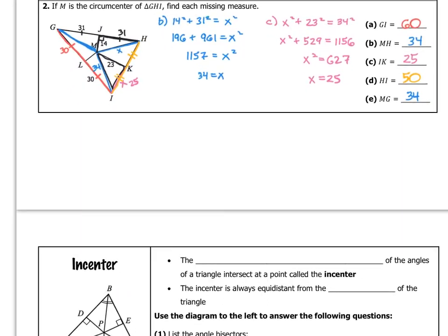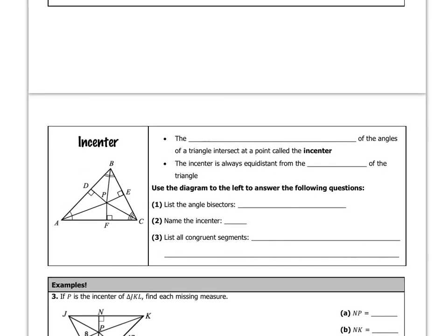Let's jump to the back side and talk about the incenter. Whereas the perpendicular bisectors intersect to form the circumcenter, it's the angle bisectors of a triangle that intersect at the incenter. The incenter is always equidistant from the sides of the triangle — very similar definitions, just with angle bisectors and sides instead of perpendicular bisectors and vertices.